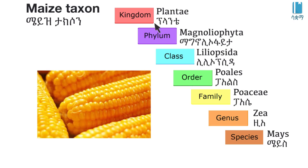Another example is a plant: Kingdom Plantae, Phylum Magnoliophyta, Class Liliopsida, Order Poales, Family Poaceae, Genus Zea, Species mays — this represents the classification of a common plant species.